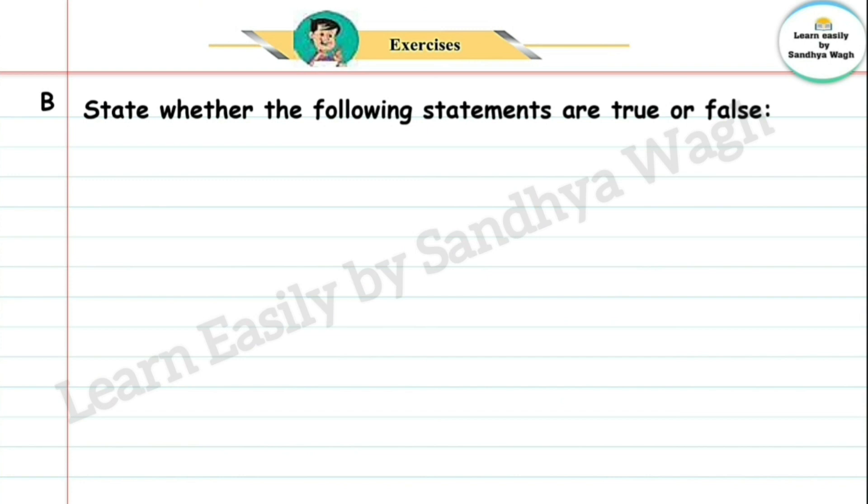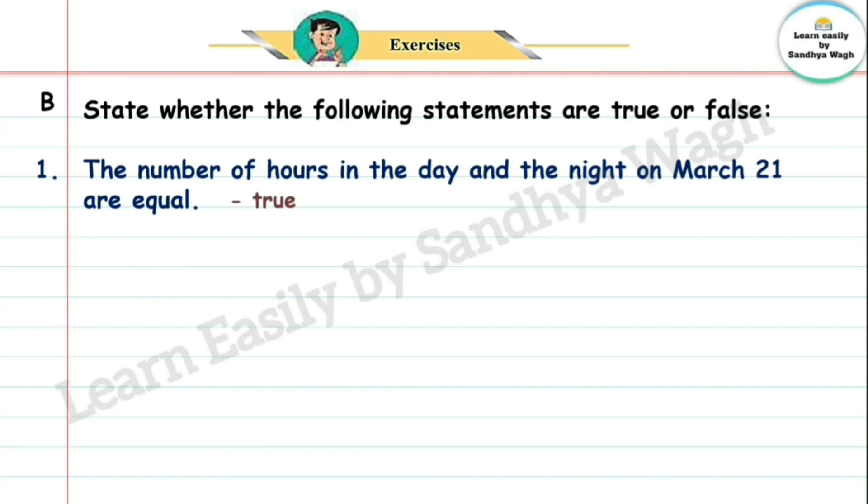State whether the following statements are true or false. 1. The number of hours in the day and the night on March 21 are equal. True. 21 March la divas aani ratri ze aars same as that. Manjez 12 hours za divas aani 12 hours ci ratras thi. He sentence correct ahi. So, true.